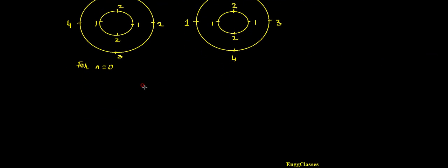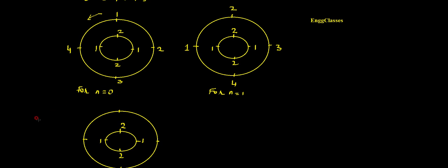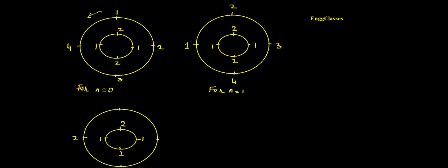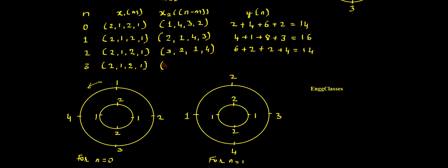The same result can be illustrated using the concentric ring approach. The inner concentric ring remains {2, 1, 2, 1}. The outer ring is shifted by one more position from the previous step, giving {3, 2, 1, 4}. Multiplying and adding the corresponding terms confirms y(2) = 14.